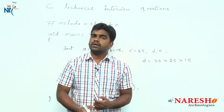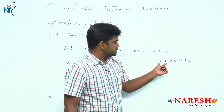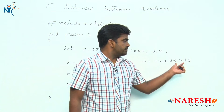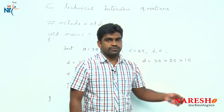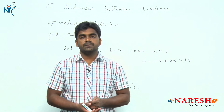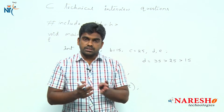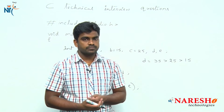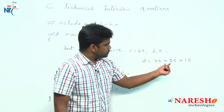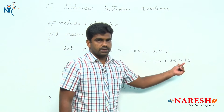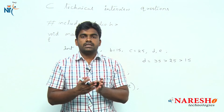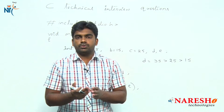Generally, according to math, 35 is greater than 25 and 25 is greater than 15, so the condition is true. But in C programming it is different. Here we are using two relational operators — both greater-than operators — and the evaluation executes from left to right.